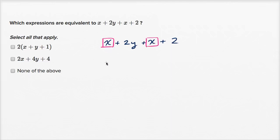So this is, actually I don't want to skip any steps. So that's x plus x plus 2y. Now I'm just switching the order, plus 2.